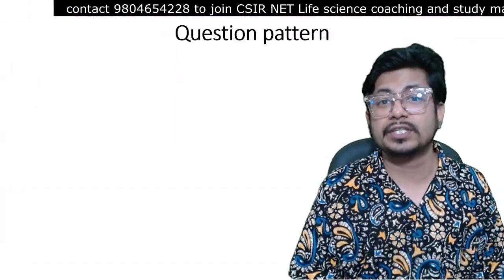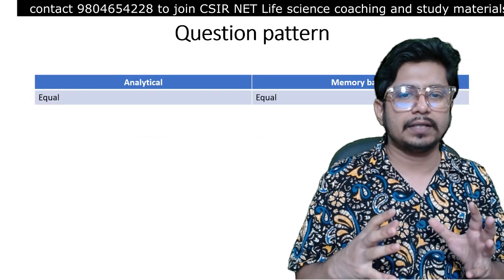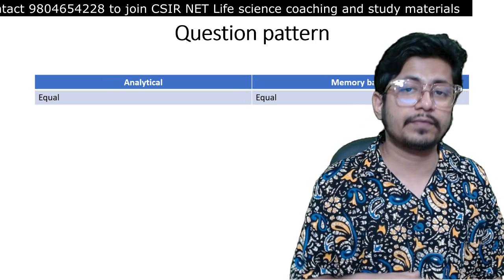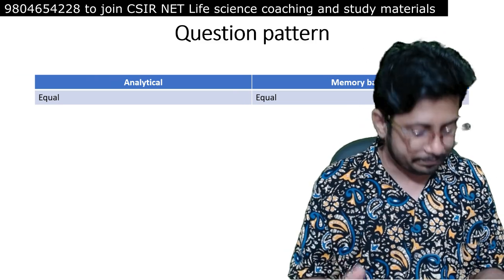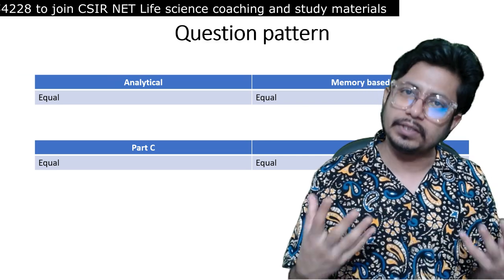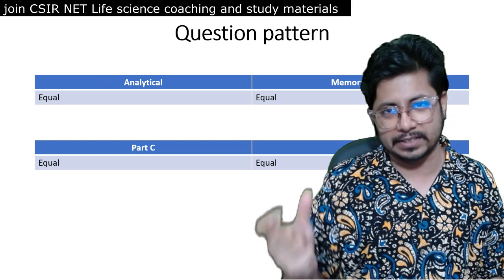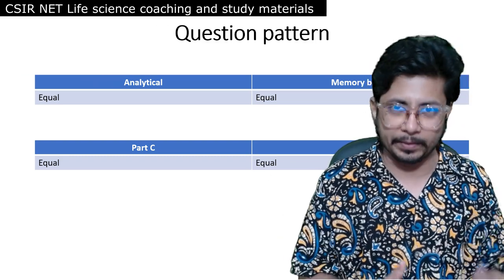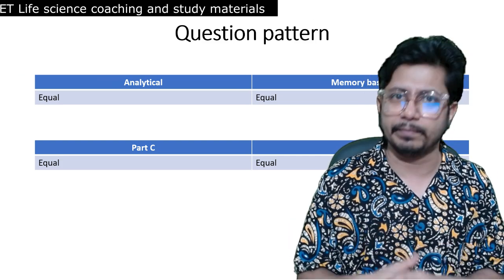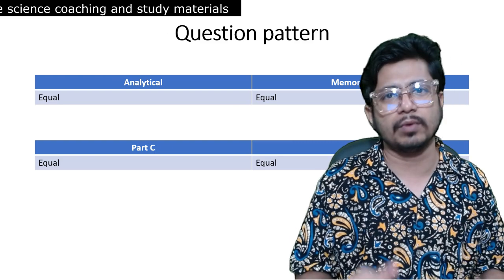Now regarding the question pattern: the analytical questions and memory-based questions you need to answer from Unit 11 are almost equal. Part B and Part C questions are also equally distributed. There is no bias toward Part C or Part B, or toward analytical versus memory-based questions — it's a mixed and balanced distribution.